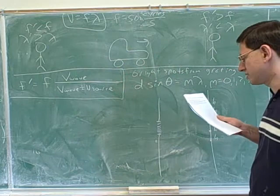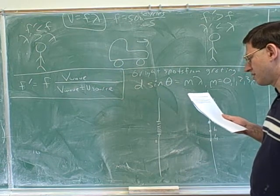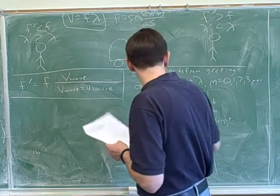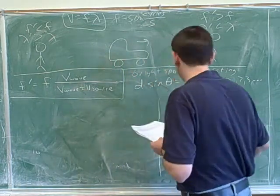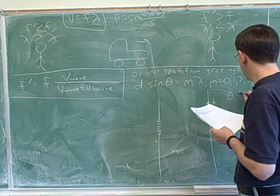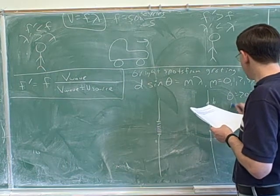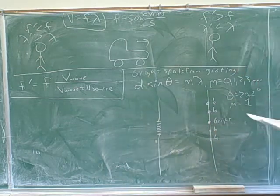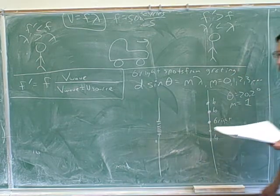The theta is 20.2. Yep, they just gave us that angle. So we know that our theta is going to be 20.2 degrees. And how do you know M equals 1? You said first order. That's right. That's that coded information. When they say first order, that means M equals 1. Good.